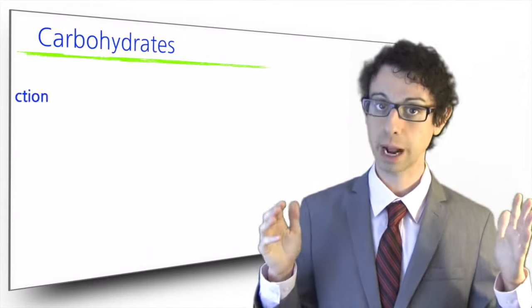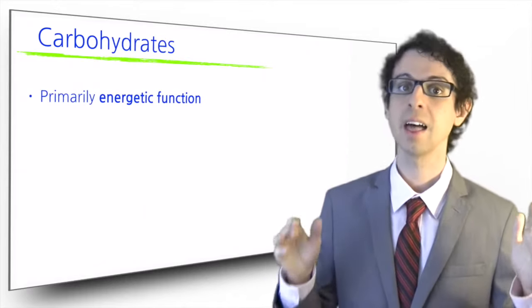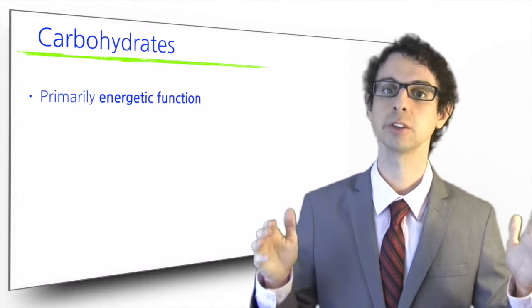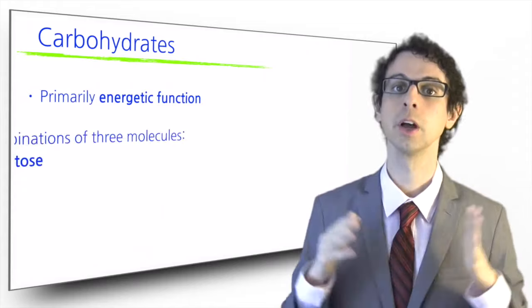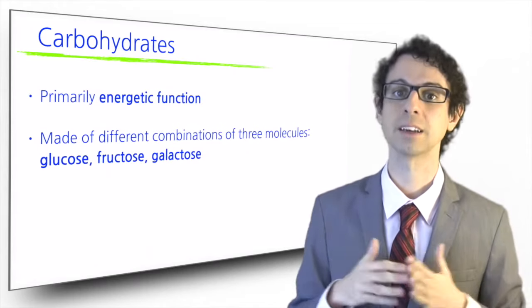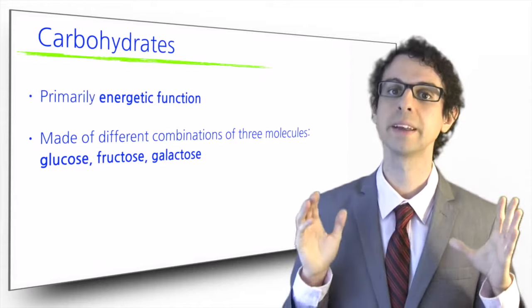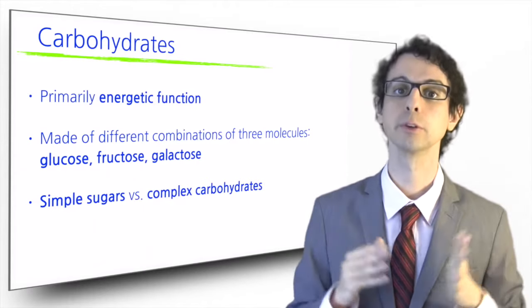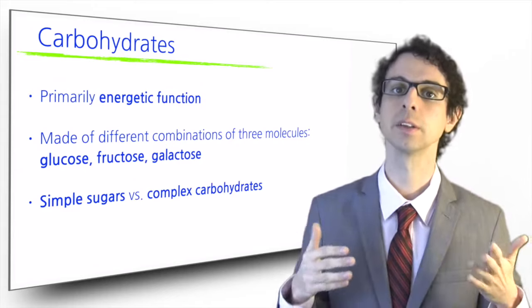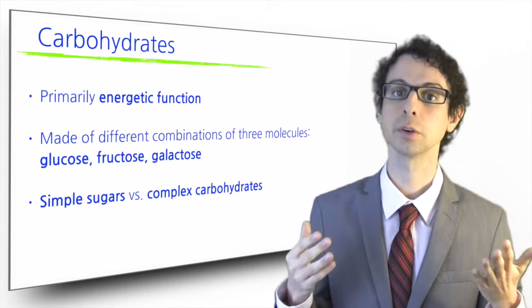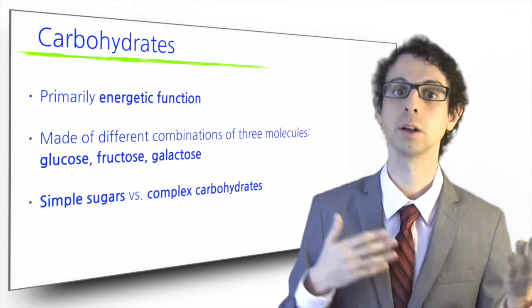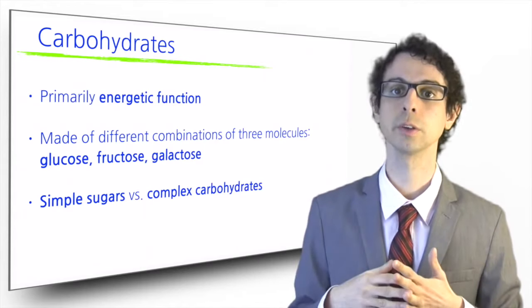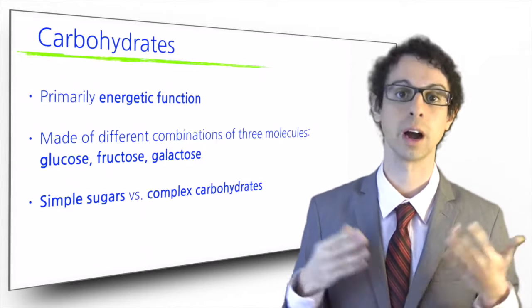Carbohydrates are nutrients whose primary function is energetic. They are made of different combinations of three small molecules called glucose, fructose, and galactose. If these molecules are present in food by themselves or combined in groups of two, we call them simple sugars. For example, glucose is a simple sugar and sucrose, which is made by one molecule of glucose and one molecule of fructose, is also a simple sugar, our table sugar.